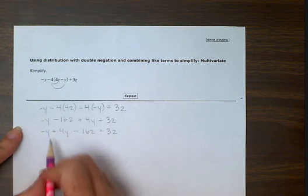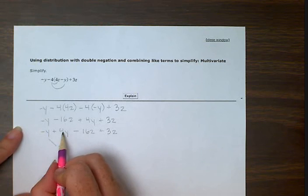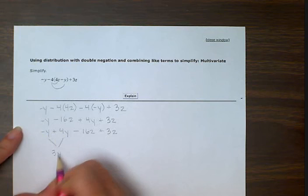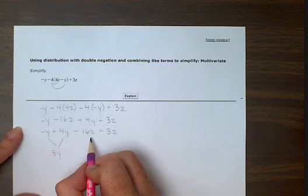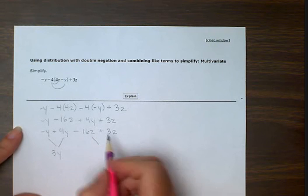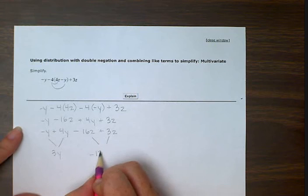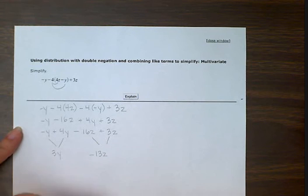Then I'm going to combine these two. Minus y plus 4y is 3y. Minus 1 plus 4 equals 3. Then I'm going to combine these two. Minus 16 plus 3, that gives minus 13 and it has that z still with it. So then our answer is 3y minus 13z.